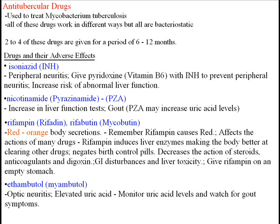Now we move on to anti-tubercular drugs. There are various drugs in this category and they all act in different ways. However, they are all bacteriostatic. They treat mycobacterium tuberculosis, which has a tendency to develop resistance strains, and therefore two to four drugs within this category should be given over a period of six to twelve months in order to combat the resistance.